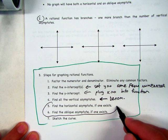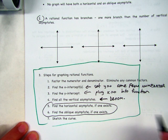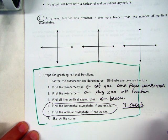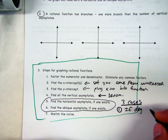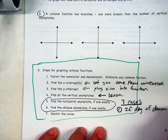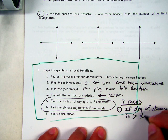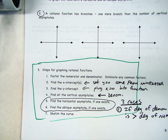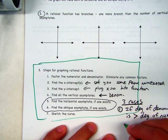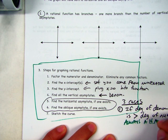For horizontal and oblique asymptotes, there are actually three cases. First case is easy: if the degree of the denominator is greater than the degree of the numerator — so if you have degree 2 on top and something to the fourth on the bottom, anything bigger than quadratic — then there's always a horizontal asymptote of y equal to 0.